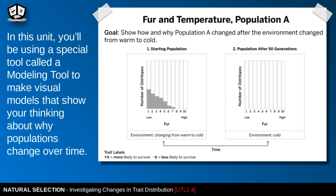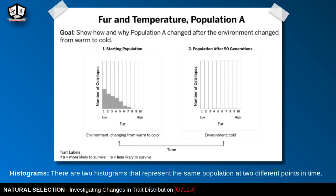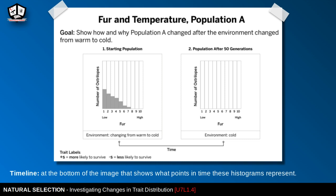In our lessons for this unit, we will be looking at a special modeling tool — histograms — which help us model how populations change over time. Here are two histograms representing the same population at two different points in time: our starting population and our population after 50 generations, giving us a timeline in this model.